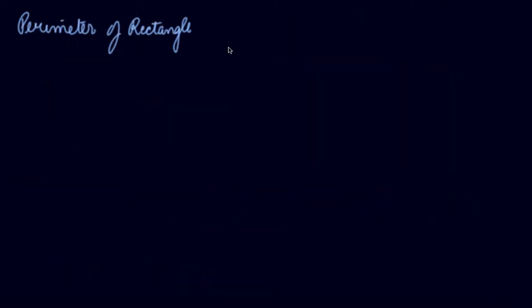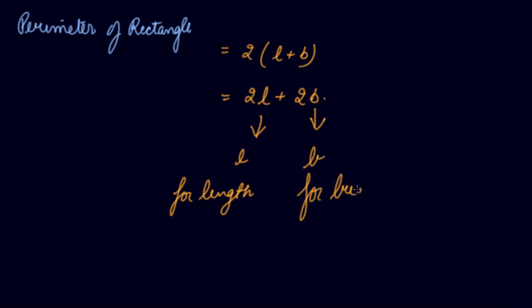Perimeter of rectangle is 2 times length plus breadth. We can say it as 2 times length plus 2 times breadth. Here we are using two variables: L for length and B for breadth of the rectangle.